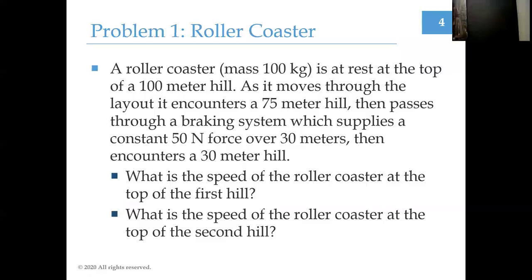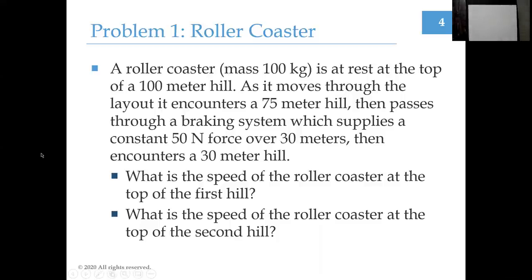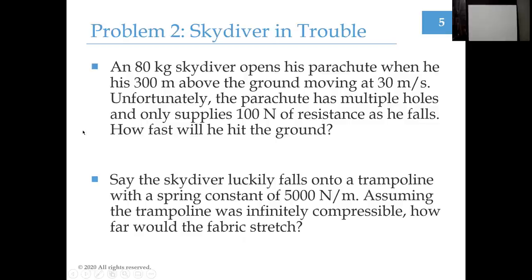Let's move on to the next question — a skydiver in trouble. As before, read through the question, draw it out, work through the first couple of setup steps for yourself, then resume the video when you're ready. Here's the situation: a skydiver opens his parachute 300 meters above the ground while moving at 30 meters per second. He didn't check his parachute before launching, so it only supplies 100 newtons of resistance as he falls. The question is: how fast is he going to hit the ground?